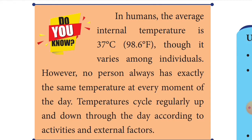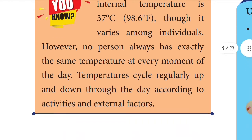Do you know the average internal temperature of the human body? It is 37 degrees Celsius, or 98.6 degrees Fahrenheit. This varies among individuals. However, no person always has exactly the same temperature at every moment, because body temperature changes second to second and cycles up and down through the day according to activities and external factors.